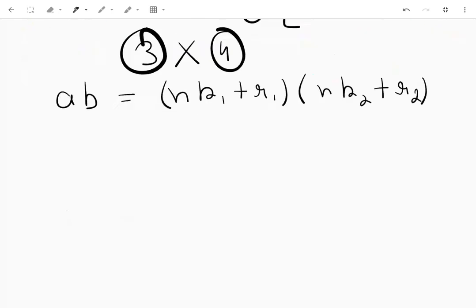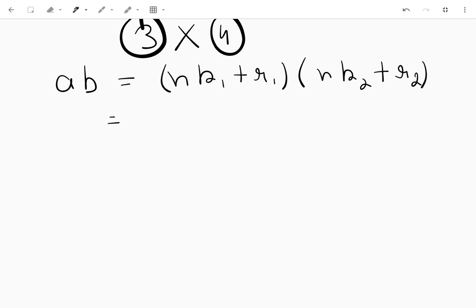Now I'll expand this. So this multiplied by this, I'll get n square k1 k2 plus n k1 r2 plus n k2 r1 plus r1 r2. This is a simple use of distributive property.